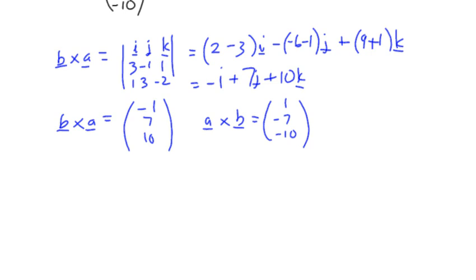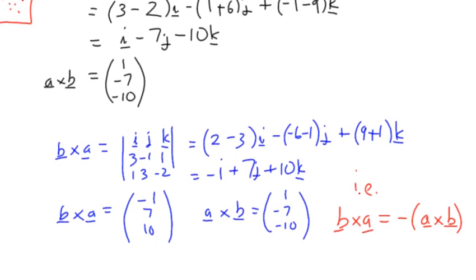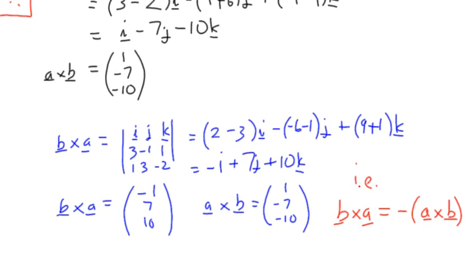Compared of course to a cross b which we've already worked out as 1, negative 7, negative 10, we've come across a really important property which is that b cross a is the negative of a cross b. Effectively they represent the same line in space or the same vector but one is in the opposite direction. That's the first calculation of a vector product. There's some more examples just to practice doing that and to see what we can do to play around with it.